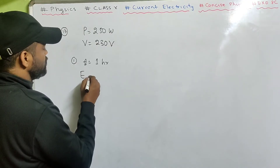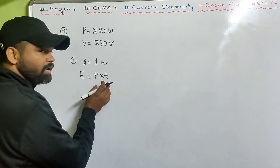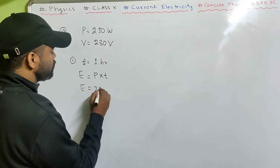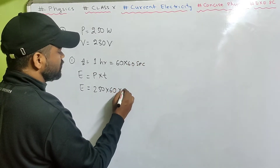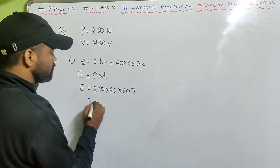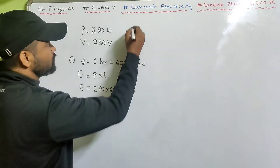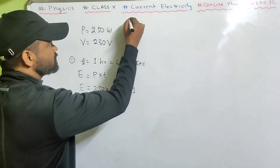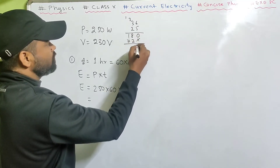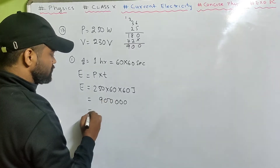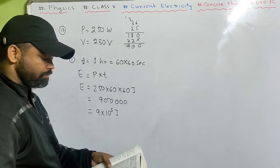For part one: energy E equals P into T. P is in watts and T is in seconds to get energy in joules. E equals 250 into 60 into 60 seconds. Calculating: 36 into 25 gives 900, with three zeros — that's 9 into 10 to the power 5 joules. That's the energy consumed in 1 hour.